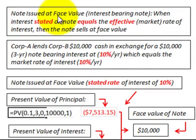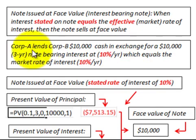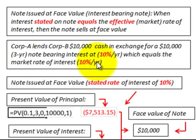Let's look at the case where a note is issued at its face value as an interest-bearing note. When the interest stated on the note equals the effective market rate of interest, the note sells at its face value. For example, Corporation E lends Corporation B $10,000 in cash in exchange for a $10,000 three-year note bearing interest at 10% per year, which also equals the market rate of interest at 10%.